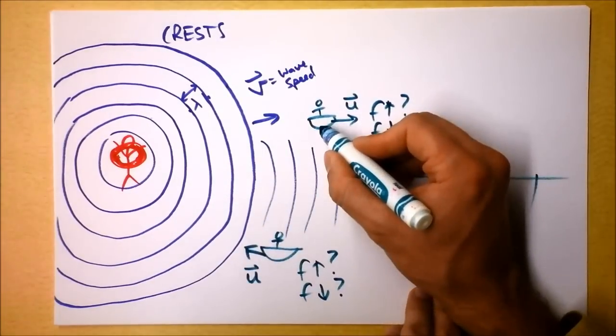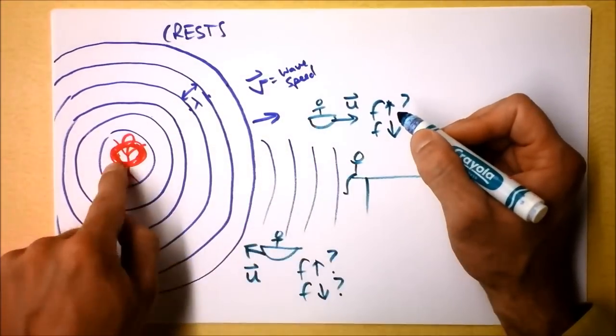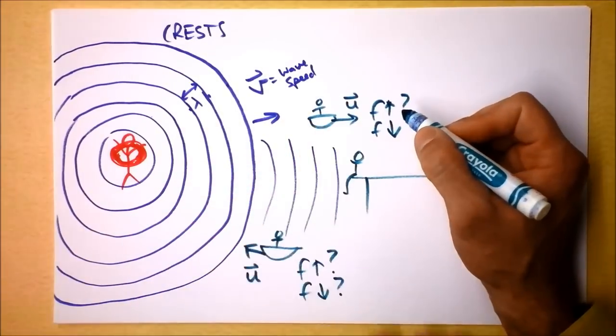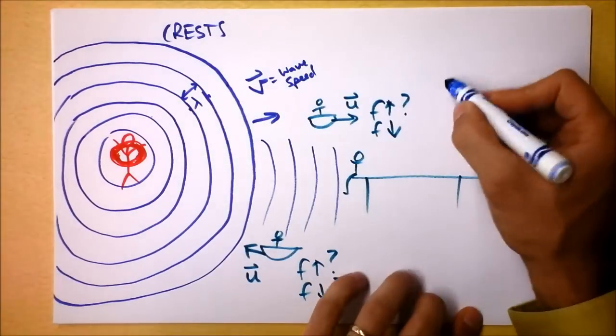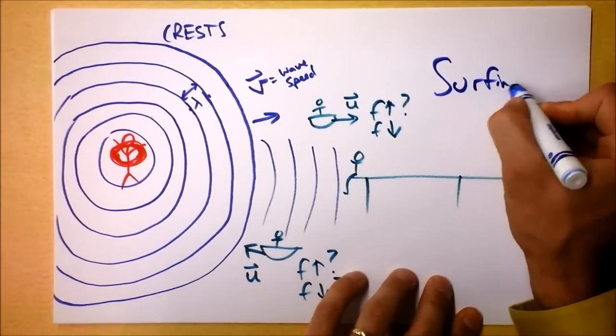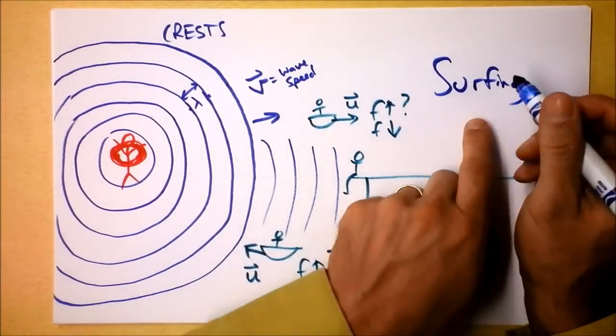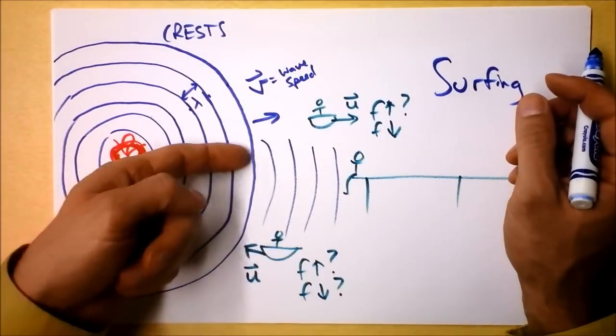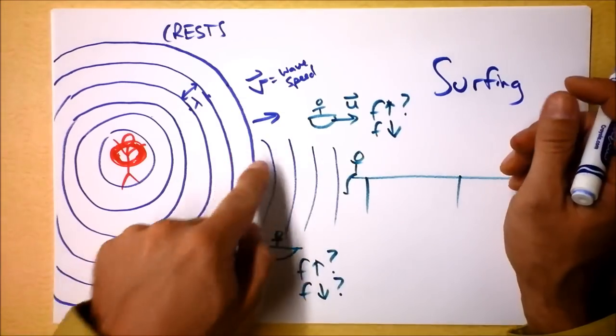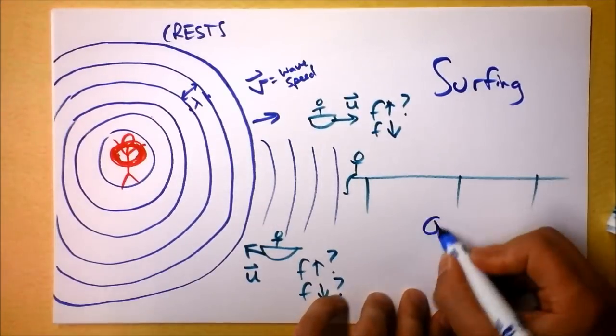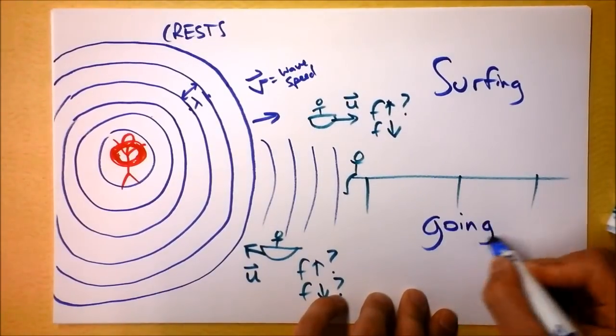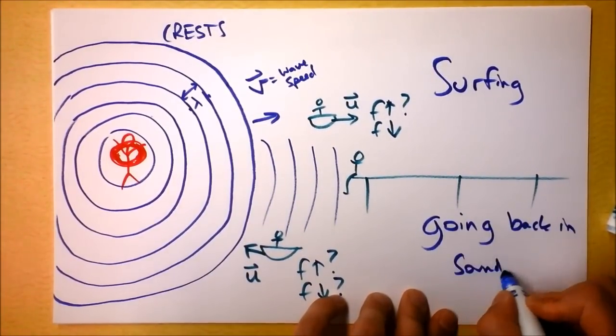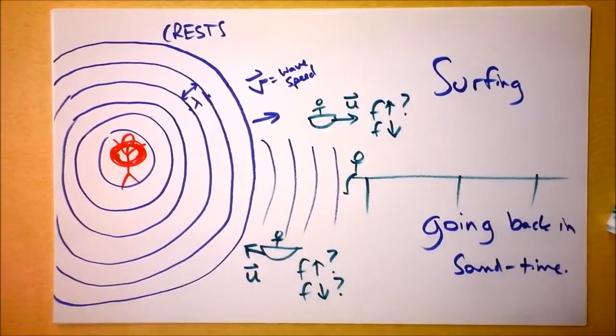Furthermore, what if you were going away from the source of the waves at the same speed as the waves themselves were traveling? Well, we call that surfing. You might be surfing a wave if you're traveling at the same speed. Or what if you're going away from it even faster than the waves are going? So you're cutting through the waves and you're seeing waves that already happened in the past. We call that going back in sound time. No one actually calls it that, I just made that up.